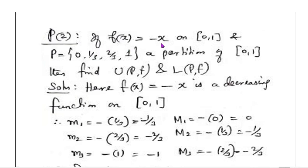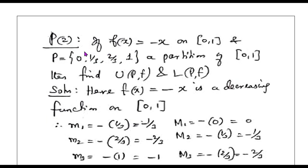If f(x) = -x is defined on the closed interval [0,1], and the partition P equals the set containing the points {0, 1/3, 2/3, 1}, this partition contains 4 partition points and hence we will be getting 3 sub-intervals. P is a partition of the closed interval [0,1]. We have to find the upper Darboux sum and lower Darboux sum.